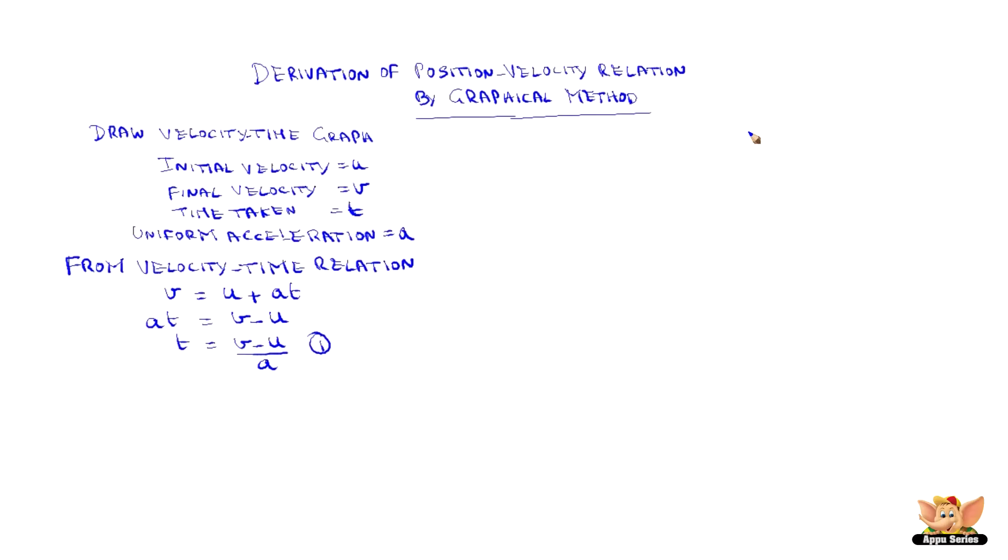Now when we draw the velocity time graph, when we see from the graph u initial velocity is nothing but oa and v final velocity is bc and time taken t is oc.